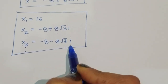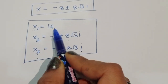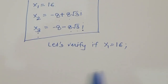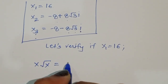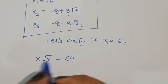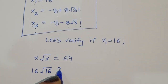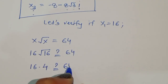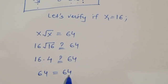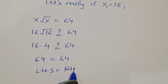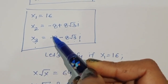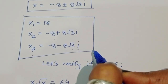Here x₂ and x₃ are imaginary solutions, and x₁ equals 16 is the real solution. We verify: substituting x equals 16 into the original equation, 16 times square root of 16 equals 16 times 4 equals 64. So LHS equals RHS, confirming x equals 16 is correct. The two imaginary solutions are x₂ equals minus 8 plus 8 square root of 3 i and x₃ equals minus 8 minus 8 square root of 3 i. Thank you.